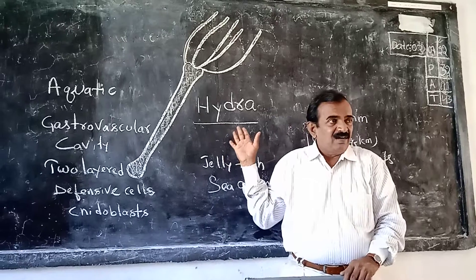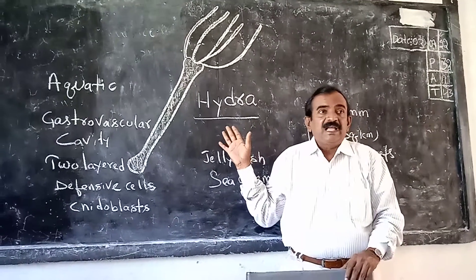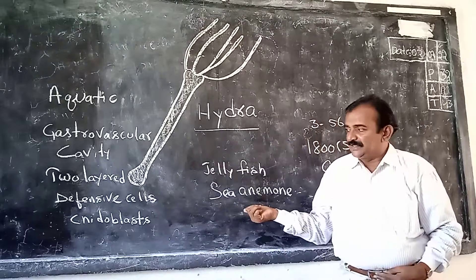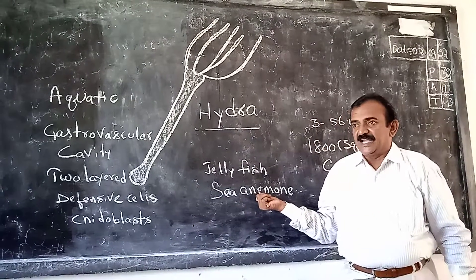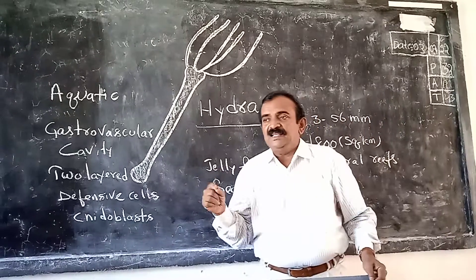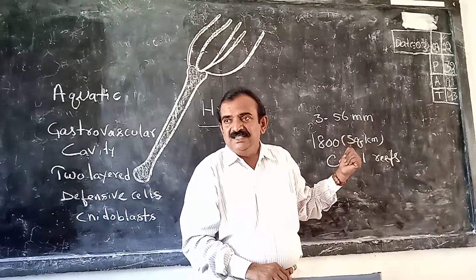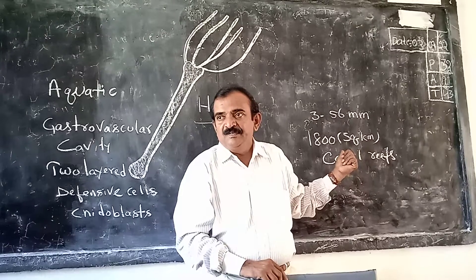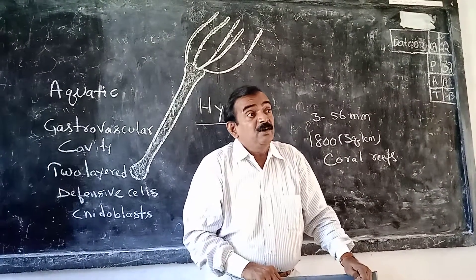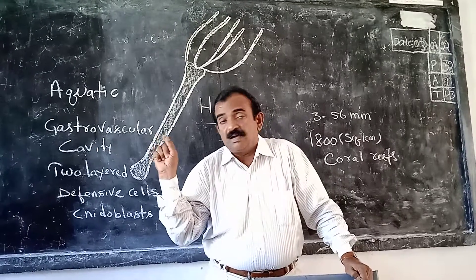What is the diagram on the blackboard? Hydra. And what is another example for Coelenterata? Jellyfish. And what is the size of these animals, Cnidaria or Coelenterata? Three to 56 millimeters — small organisms.